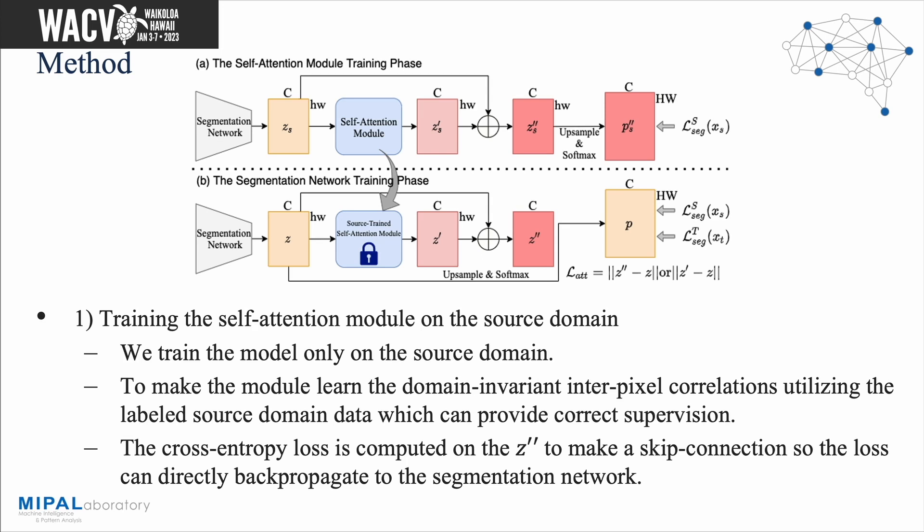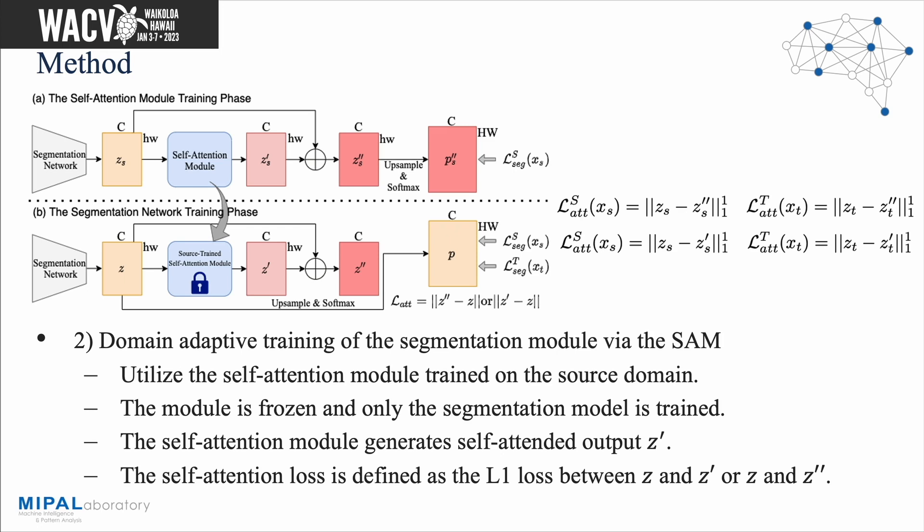When training is done, the segmentation network is discarded and only the self-attention module is kept for the actual domain-adaptive training. The second step is to train the segmentation model utilizing the source-trained self-attention module. The self-attention module is frozen and only the segmentation model is trained. The module outputs a new self-attended output Z'', given the segmentation model's output as input. The self-attention loss is defined as the L1 loss between Z and Z''. The segmentation network is trained to minimize not only the cross-entropy loss but also the self-attention loss, learning additional pixel-wise correlations provided by the module.